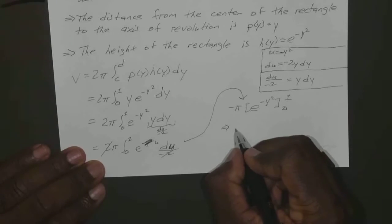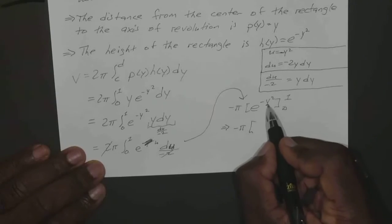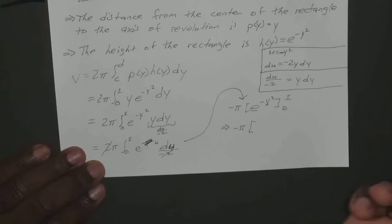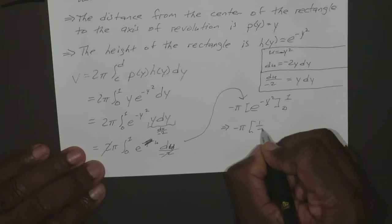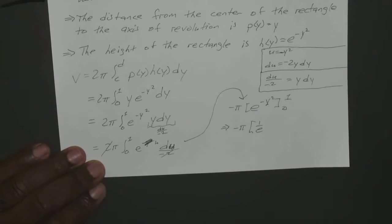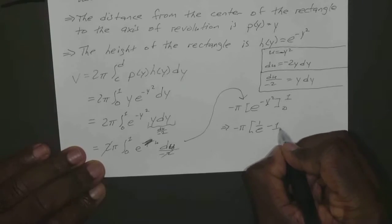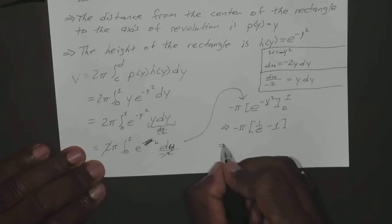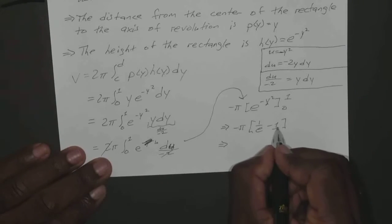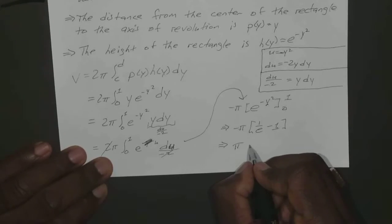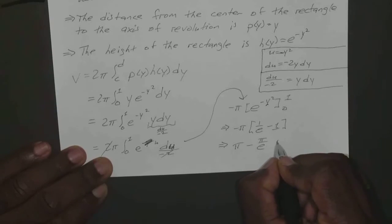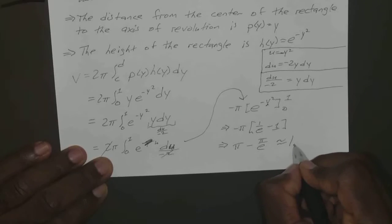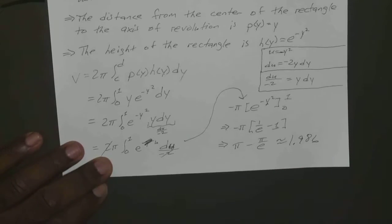Okay, so if we plug in our 1, we end up with negative π. Plug in 1, you have e to the negative 1, which is 1 over e. Plug in the 0, you have e to the 0, which is just 1. So if you distribute negative π, you end up with negative π times negative 1 is positive π, negative 1 times positive 1 over e is negative π over e. Plug that into your calculator, you should get 1.986, give or take.